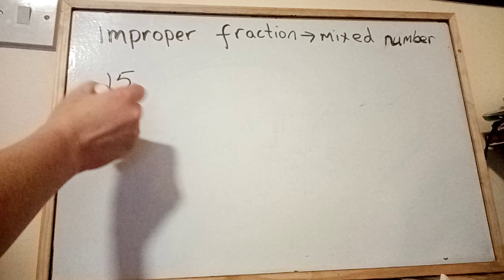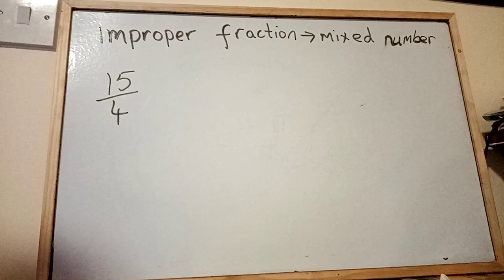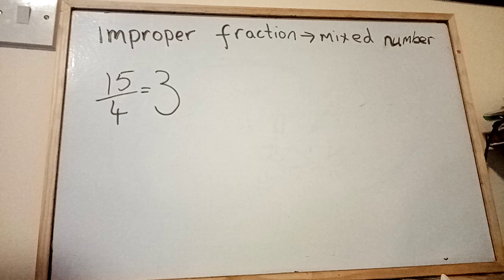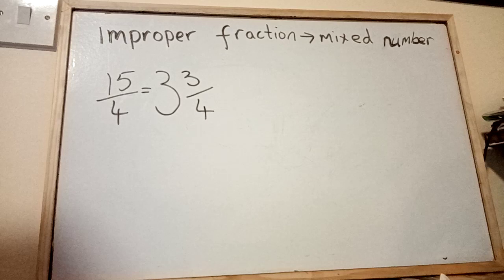So you divide 15 by 4. Go 4, 8, 12... 12 is the closest, so it goes 3 times. The big 3. And there's a remainder of 3, so it'll be 3 and 3 quarters.